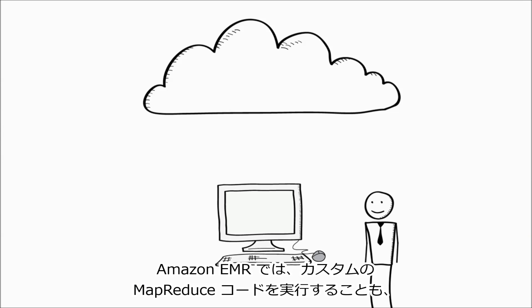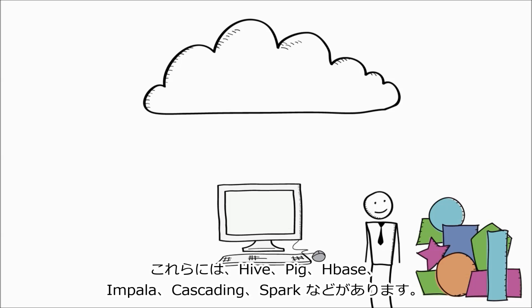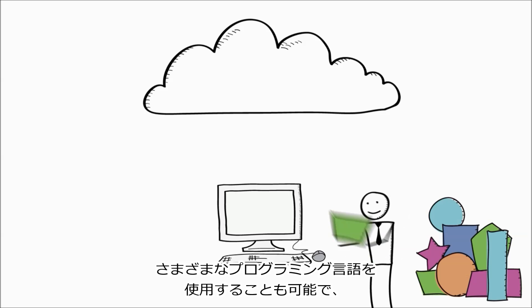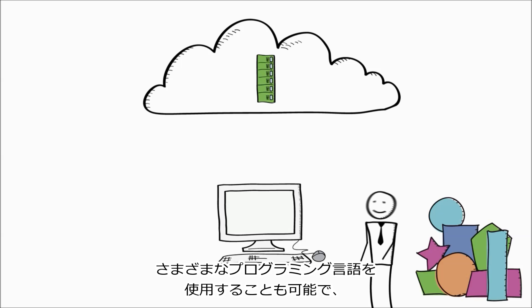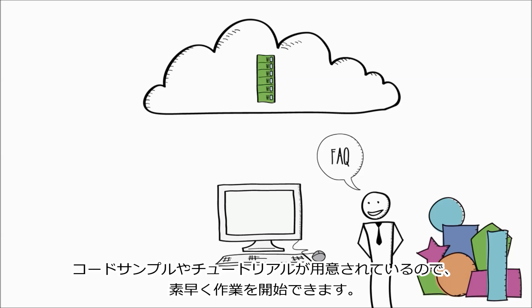With Amazon EMR, you can run custom MapReduce code, or use a variety of powerful applications and frameworks such as Hive, Pig, HBase, Impala, Cascading, and Spark. You can use a variety of different programming languages, and we provide code samples and tutorials to help get you up and running quickly.